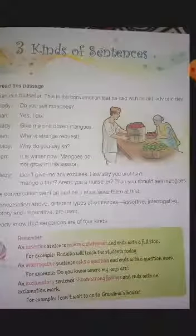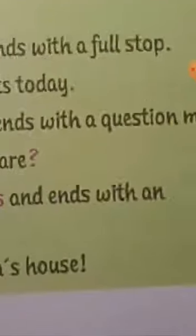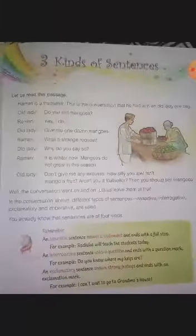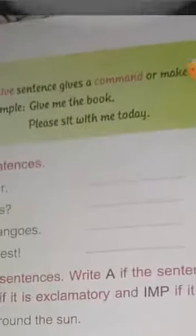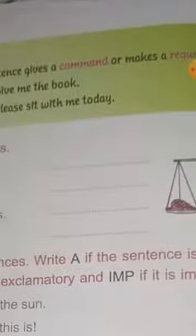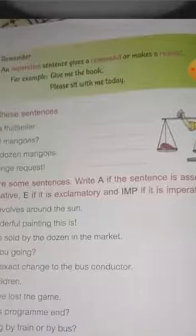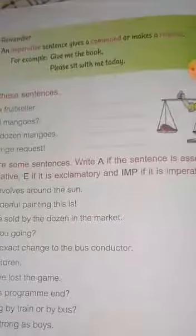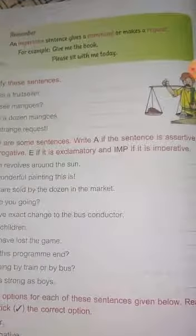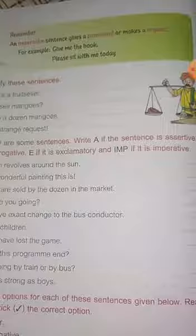I think you know how the exclamatory mark looks — it looks like this, as you can see. Now, take the example: 'I can't wait to go to grandma's house!' Here you can see the exclamatory mark is used at the end, so this sentence is an exclamatory sentence.